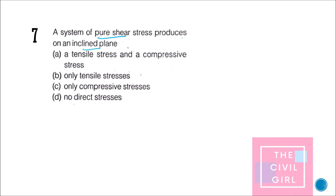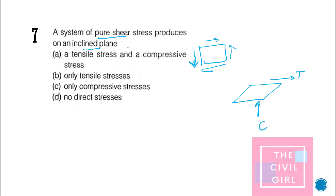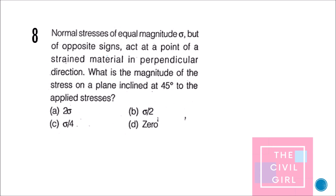Next question: a system of pure shear produces on an inclined plane — what? As discussed, pure shear produces tension in one direction and compression in the perpendicular direction, so it produces a combination of tensile and compressive stresses. The answer is option A.